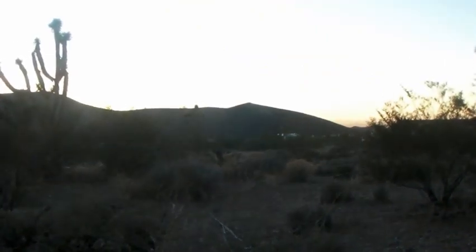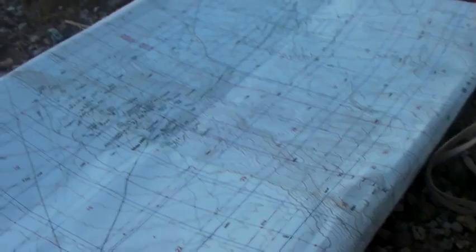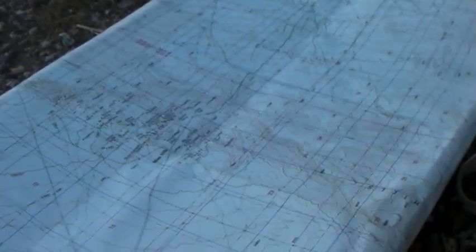We're going to use a declination adjustable compass to site a bearing to a known location on the ground, in this case a hilltop, and then plot that bearing to the map.